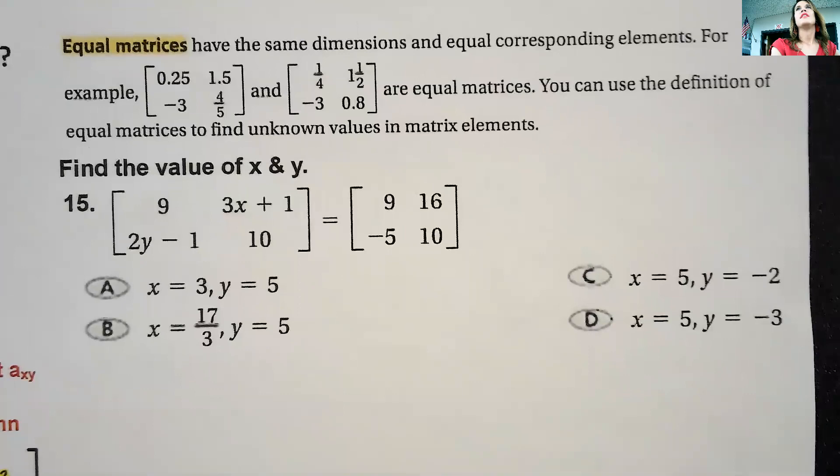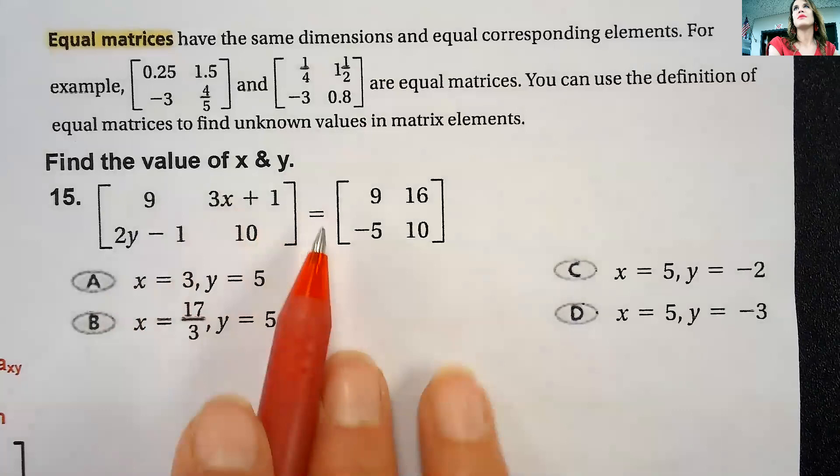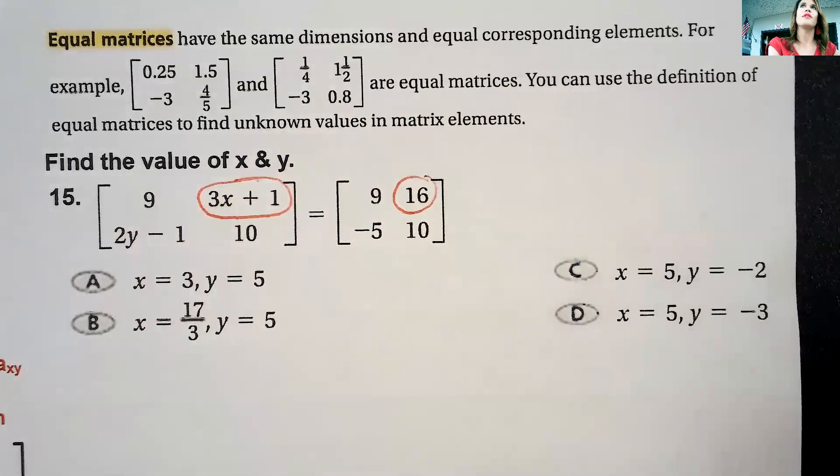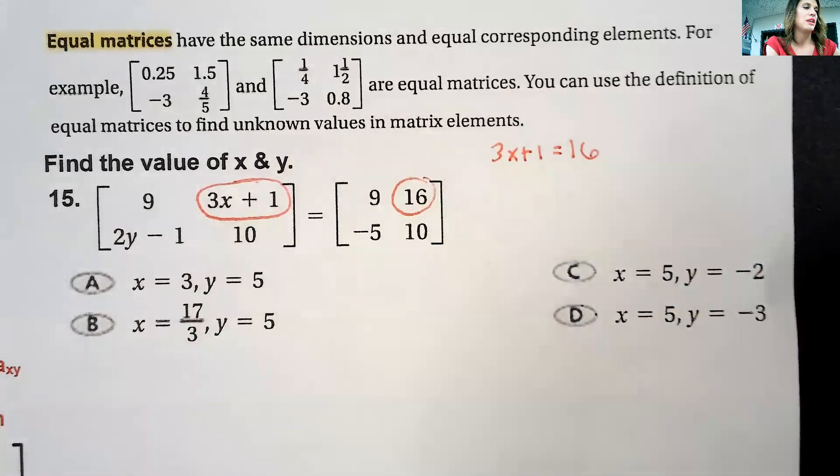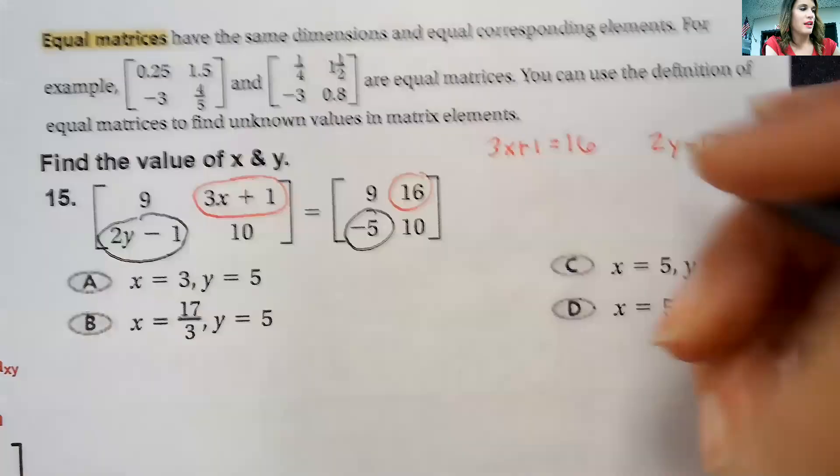Alright. If the matrices are equal, then that means each element that's at the same place as the other matrix is the same. So for instance, on number 15 it says to solve for x and y. This is in the first row, second column. It's going to be equal to the first row, second column of the other matrix. So when you set these up to solve it, 3x + 1 is going to equal 16, and 2y - 1 is going to equal -5.